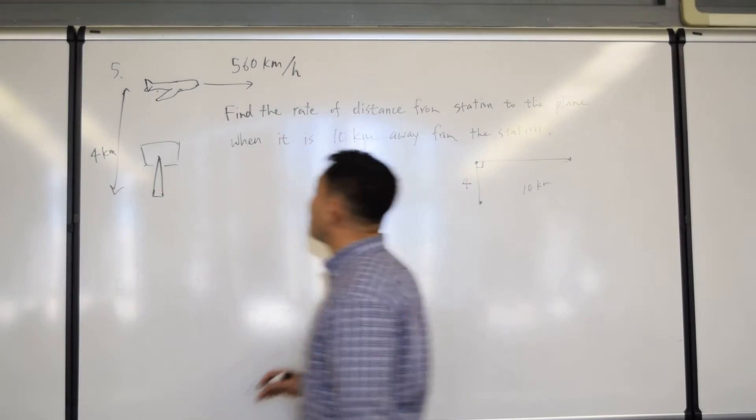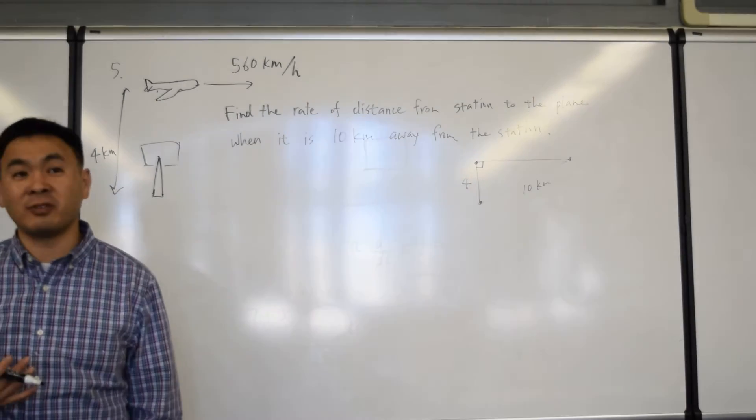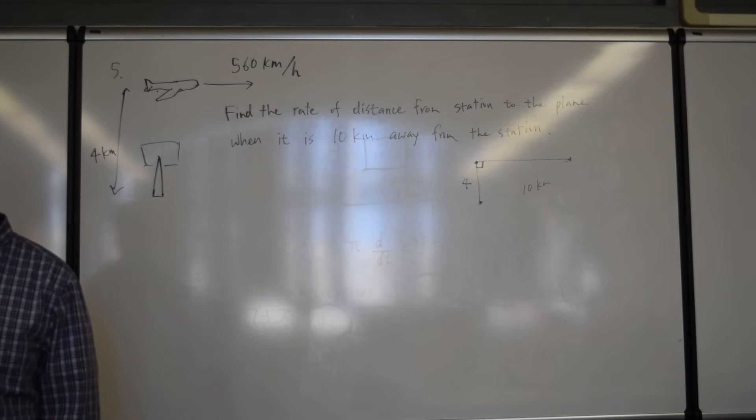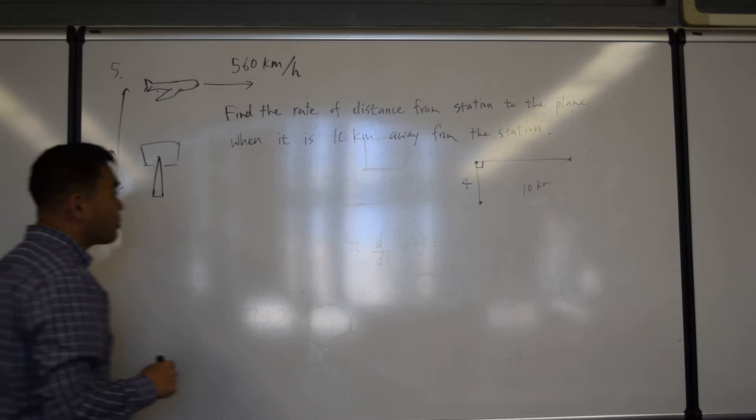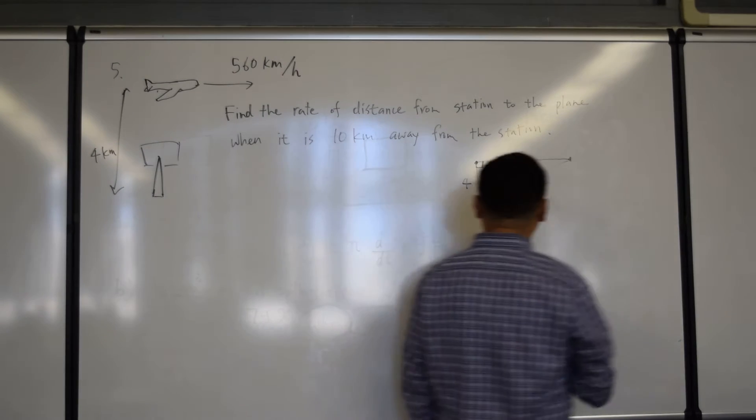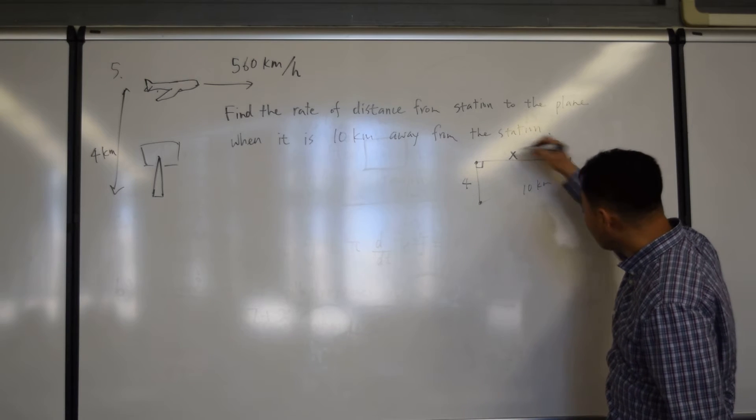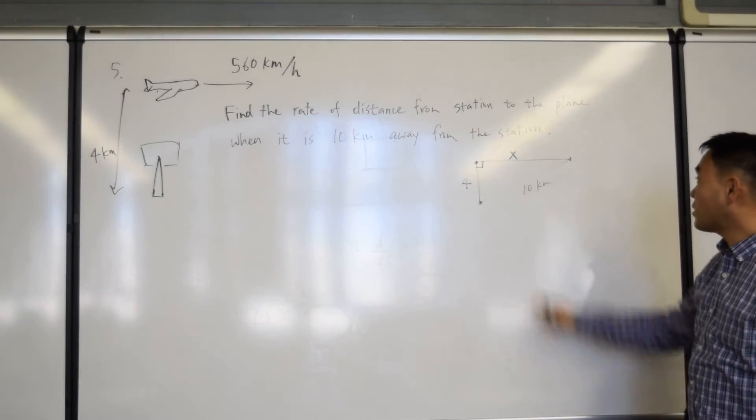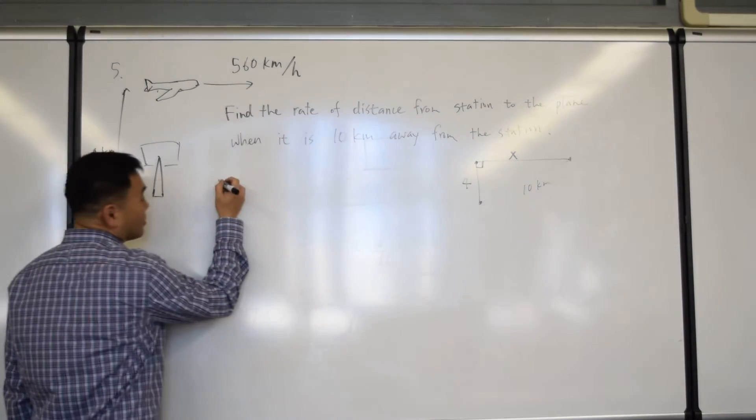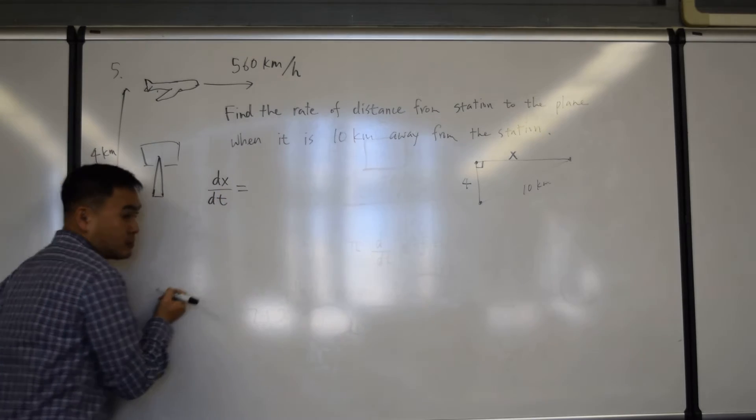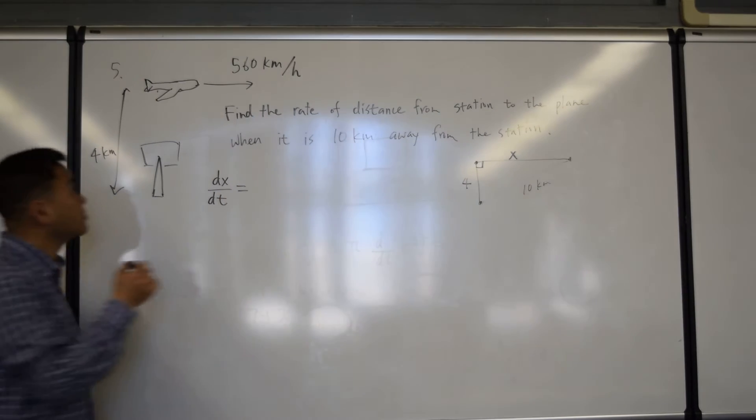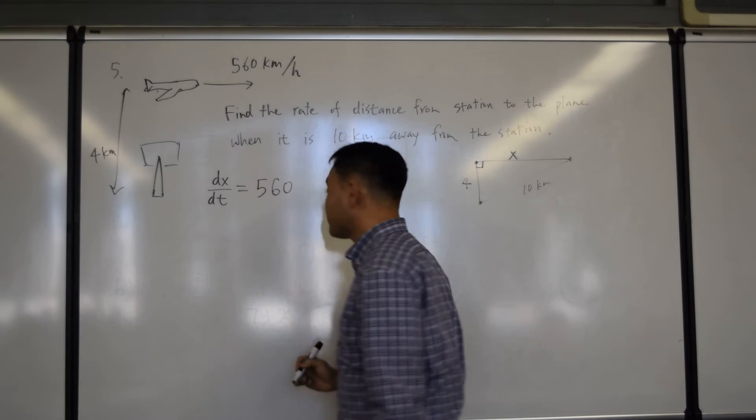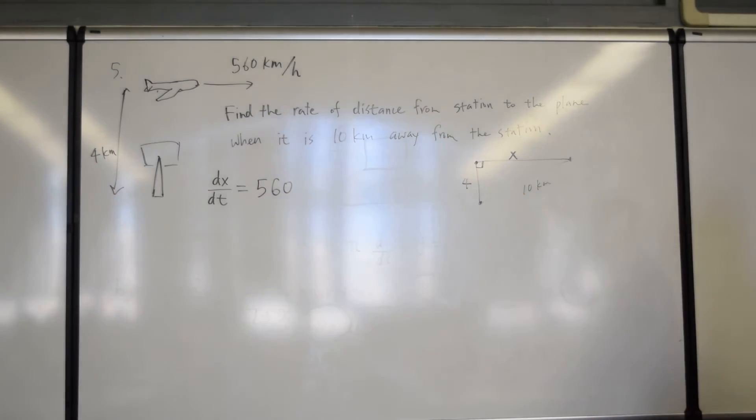So I didn't write down the first sentence, but in the first sentence, there's something that corresponds to the derivative. What is it? Speed. So, in order to have that, I should mark this side as x. The speed of the plane is how fast the position is changing. So I should put the x there so that dx dt is what? 560, this number. And then, do you see any other derivative?